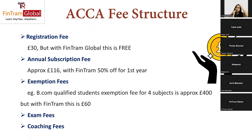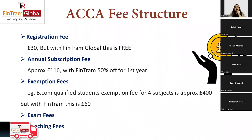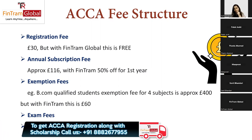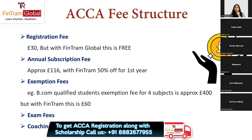There are also exemption fees — for each subject you get exempted from, ACCA charges a fee since you're not sitting the exam. The total depends on how many exemptions you receive. For example, a BCom-qualified student gets four exemptions, for which ACCA charges approximately 400 pounds. However, with Fintram Global, you'd pay just 60 pounds instead of 400. For CIMA qualifications with more exemptions, the amount increases, but Fintram offers a reduced rate.